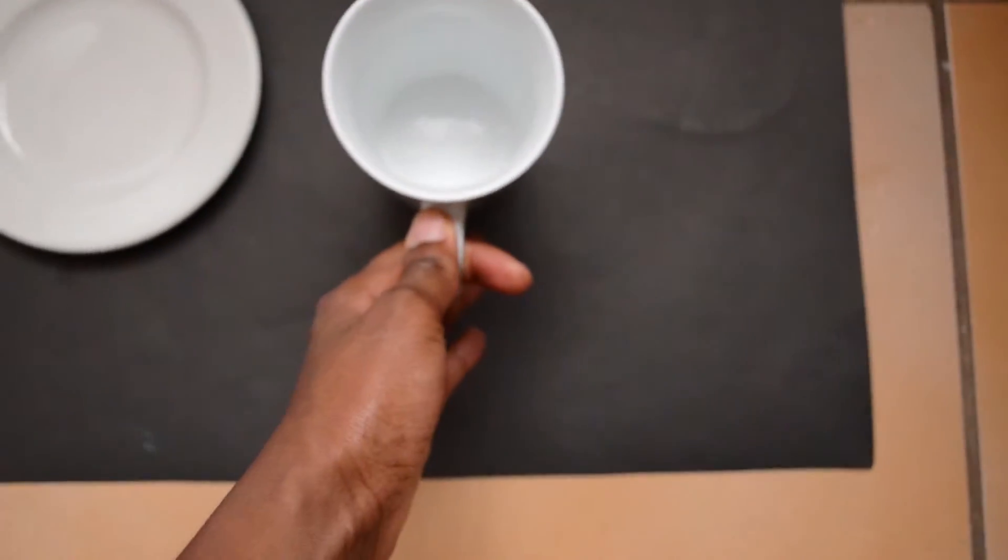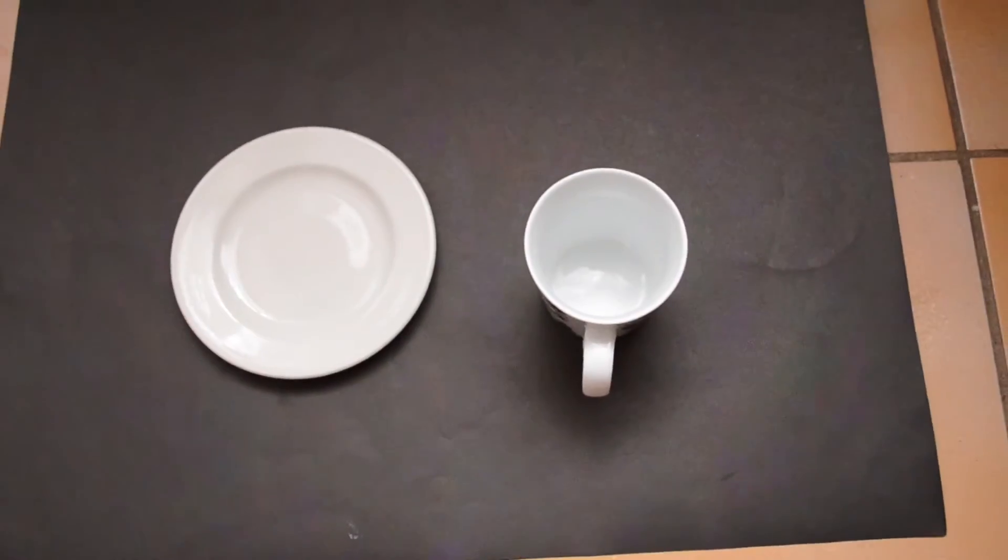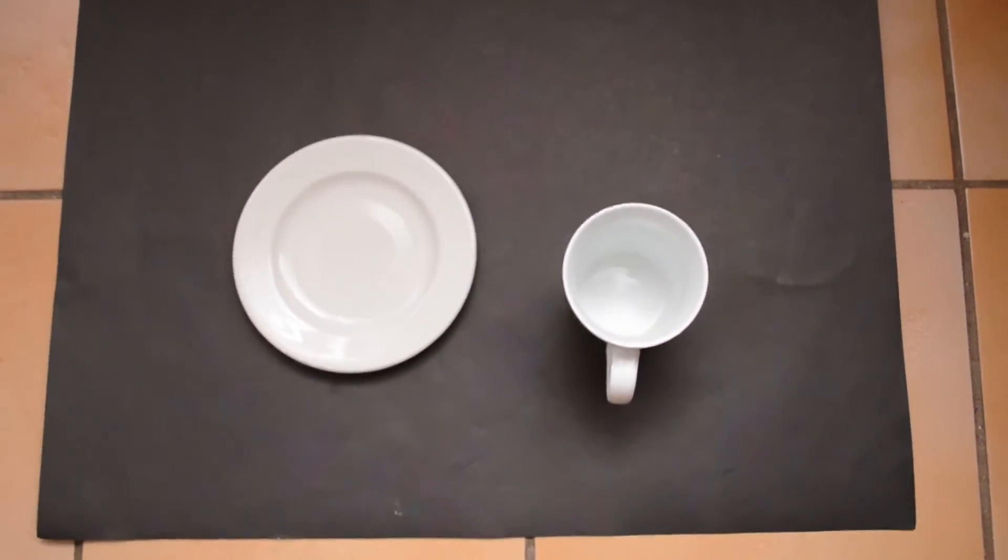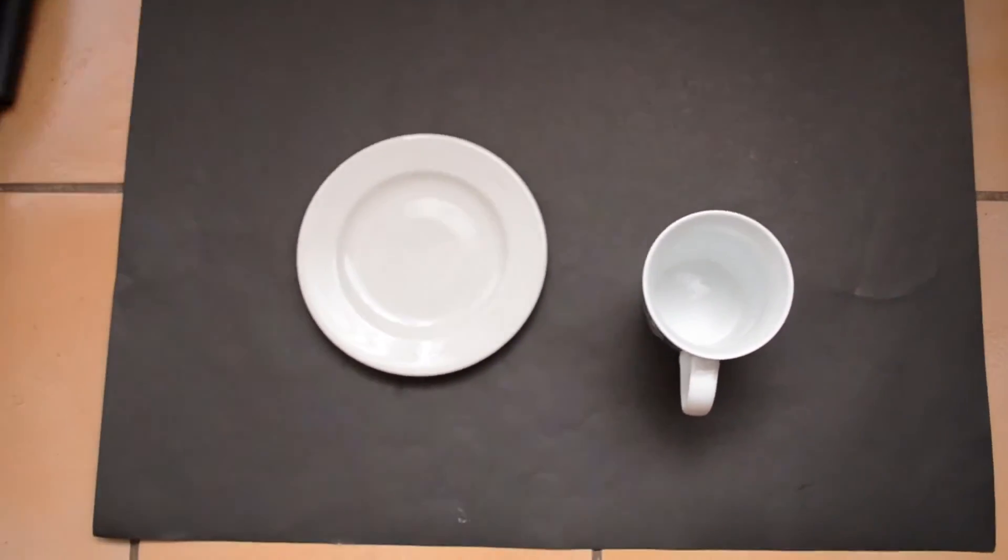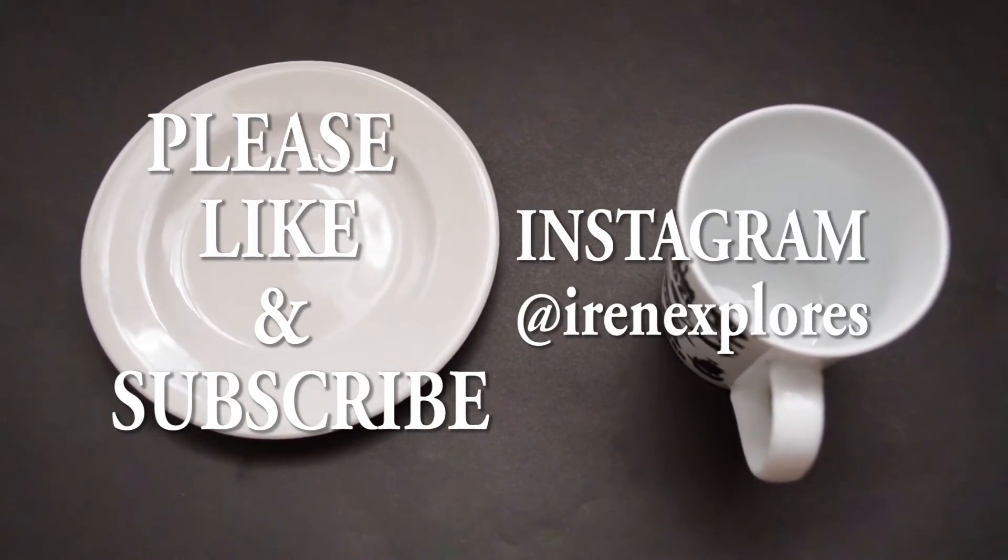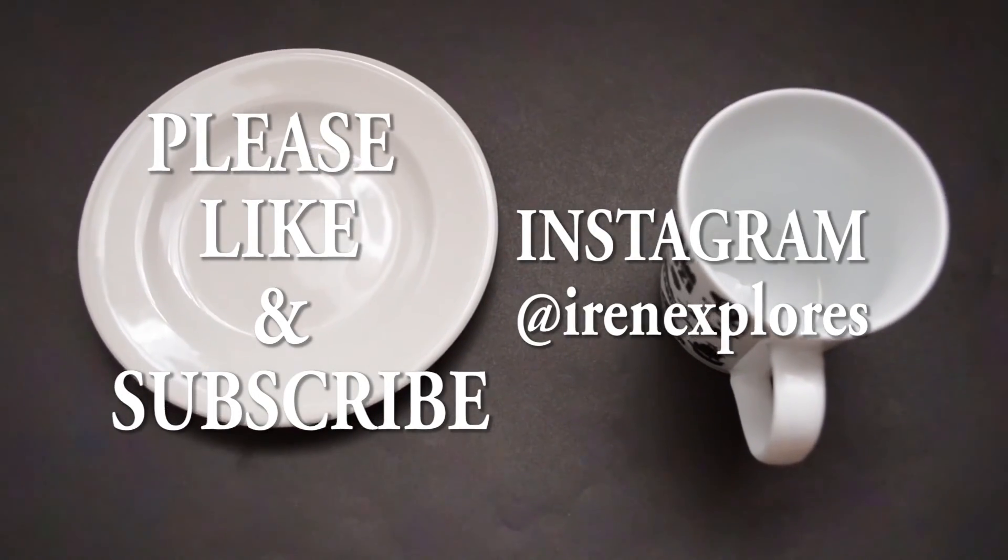You can place whatever you want to photograph. That's the placement of the shot against the Manila paper. You can place the camera right above it or to the side. Okay guys, please like and subscribe for more videos and check me out on Instagram @irenexplores. Bye!